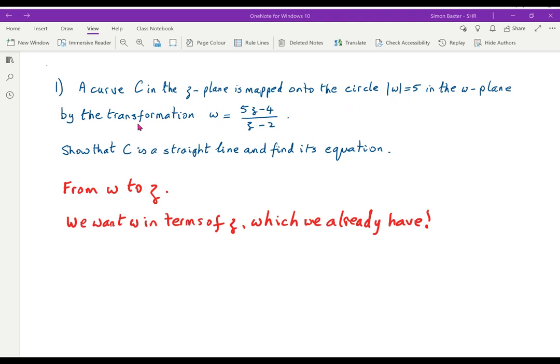Let's suppose that the transformation in this case is W equals 5Z minus 4 over Z minus 2. Show that the curve in the Z plane is a straight line and find its equation. We're going from W to Z. We know what's happening in the W plane, what is the curve in the Z plane. In this case we want W in terms of Z. We already have it so don't do anything.